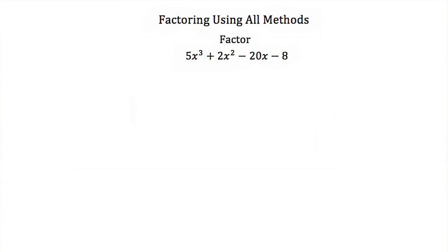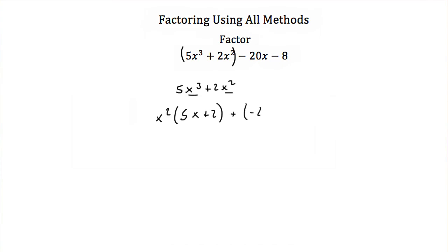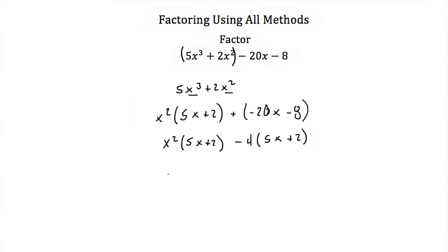Taking the first two terms, 5x cubed plus 2x squared, I can pull out a greatest common factor of x squared, giving x squared times (5x plus 2). Looking at the other two terms, negative 20x minus 8, I can factor out negative 4, giving negative 4 times (5x plus 2). Now I have x squared times (5x plus 2) minus 4 times (5x plus 2), so I can factor out (5x plus 2), ending up with (5x plus 2) times (x squared minus 4).